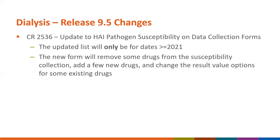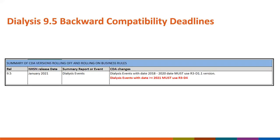CR2536 is a child CR from patient safety where updates are being made to the HAI pathogen susceptibility data collection form. This update will be valid for dates 2021 or greater—please use the anti-B 9.5 tab for any events dated 2021 or greater. Dialysis events will be updated to the R3D4 implementation guide starting in 2021.